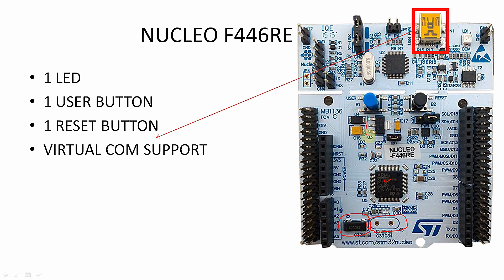This is a 3.3 volt regulator which regulates the 5 volt signal from the USB cable and powers the microcontroller with 3.3 volts. This particular jumper is useful for toggling the power state — when connected as it is now, the microcontroller will be powered from the USB port.